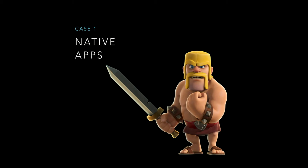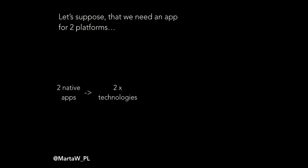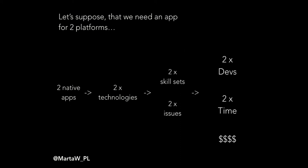Our first case: native apps. This is the most popular because of performance — these apps are fast and reliable. We use one specific programming language to implement an application on a specific platform, iOS or Android. We have the best access to the operating system and can use any native features we want. These apps are great because we have real native elements. But if we need two native apps for two platforms, we need two technologies, two more skill sets, a larger developer team, more time, and more cost. We don't like that.